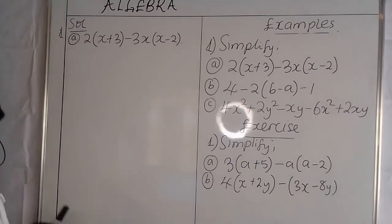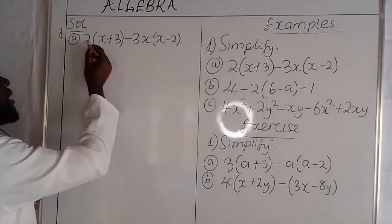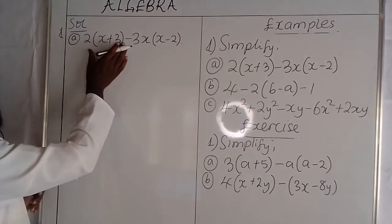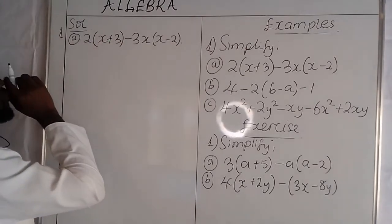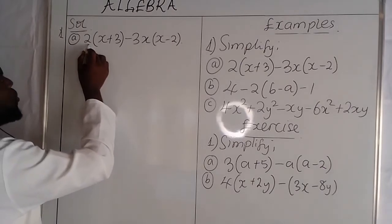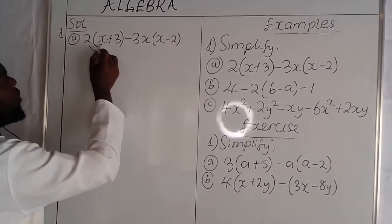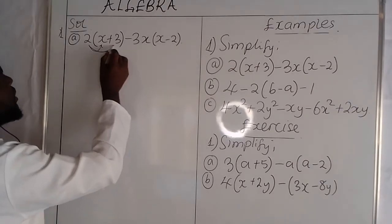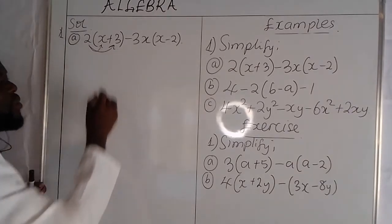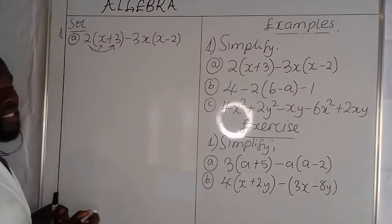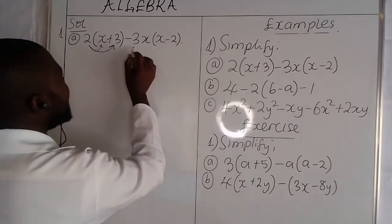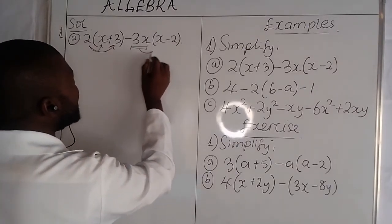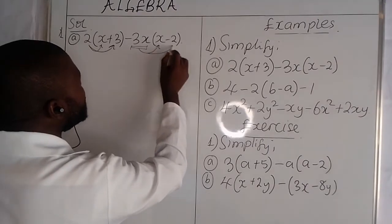You can see there is a 2 outside here and we are multiplying by x plus 3. So we need to multiply this 2 by each one of the things inside. Similarly here, we need to multiply this by each one of these two terms.